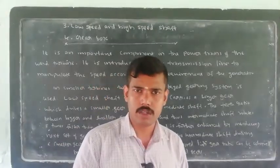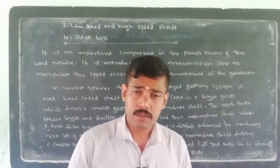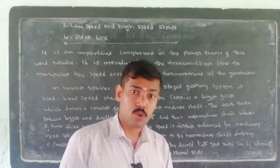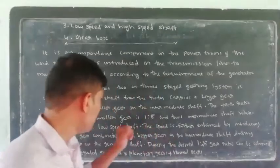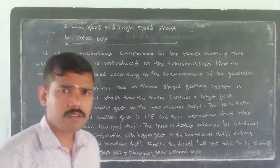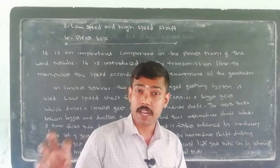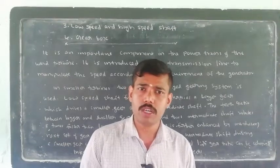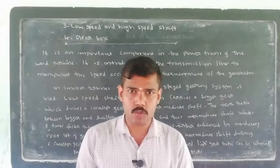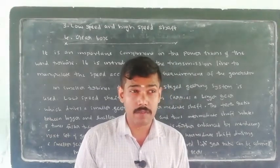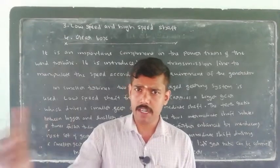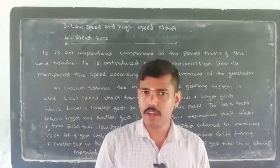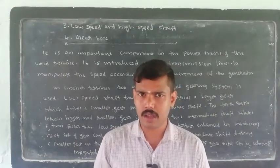Then we do the same for the intermediate shaft. The intermediate shaft has a bigger gear connected to a smaller gear on the generator shaft, with a teeth ratio of 1 to 5. So the generator shaft rotates 5 times faster than the intermediate shaft.